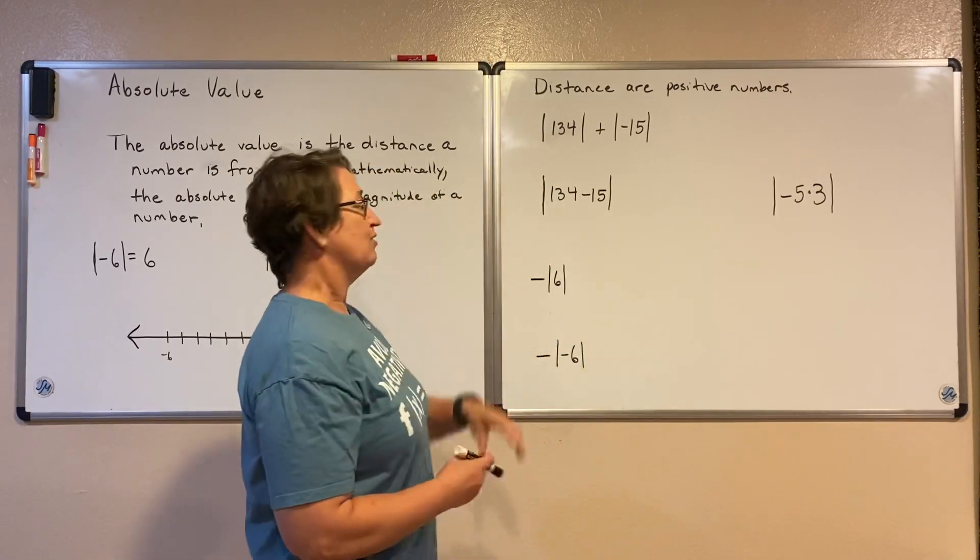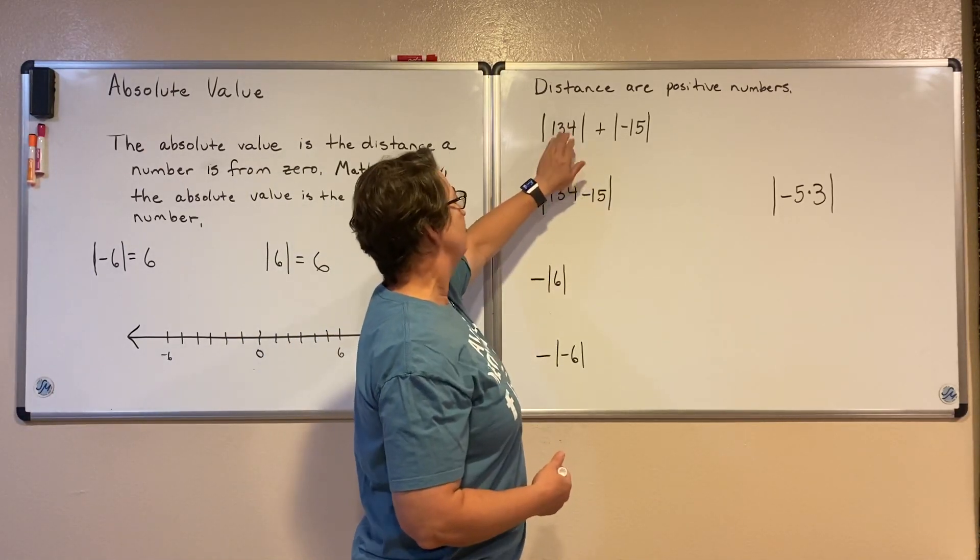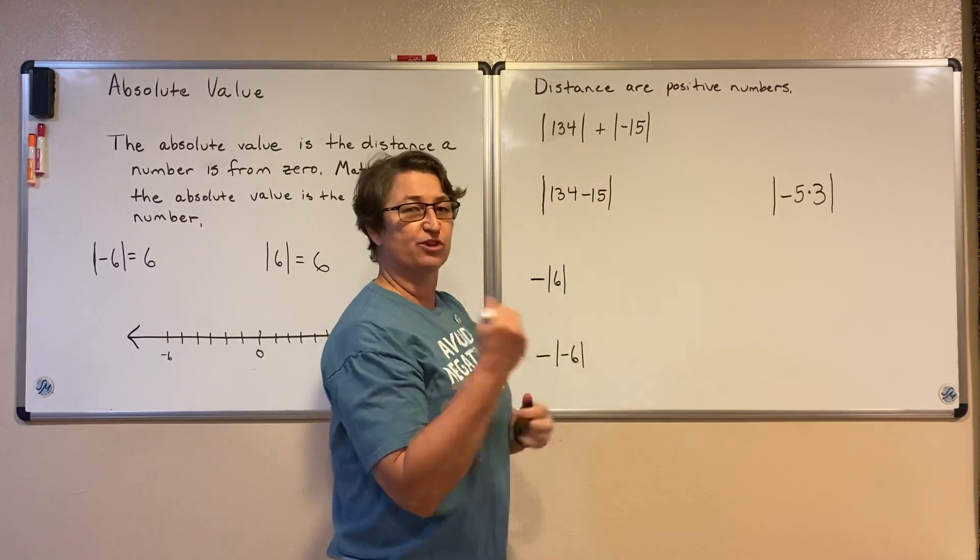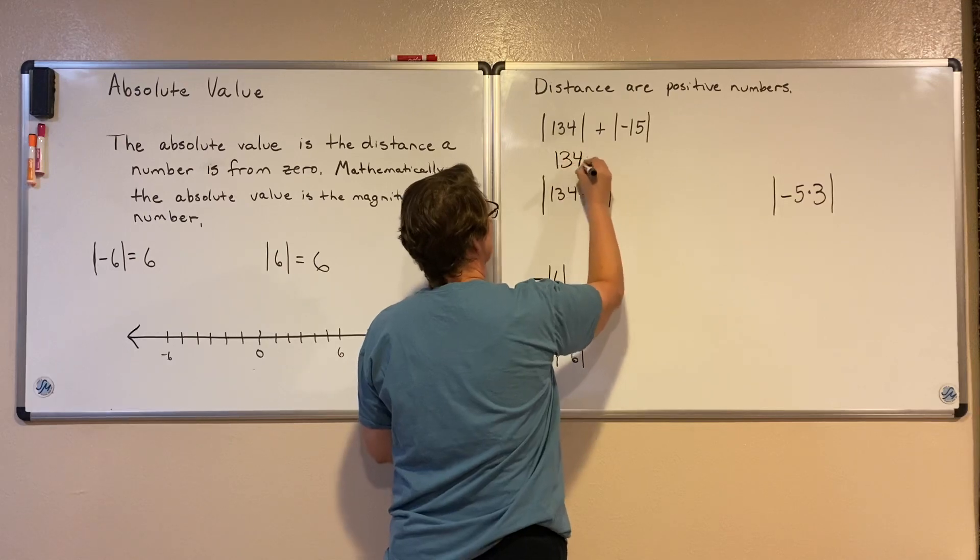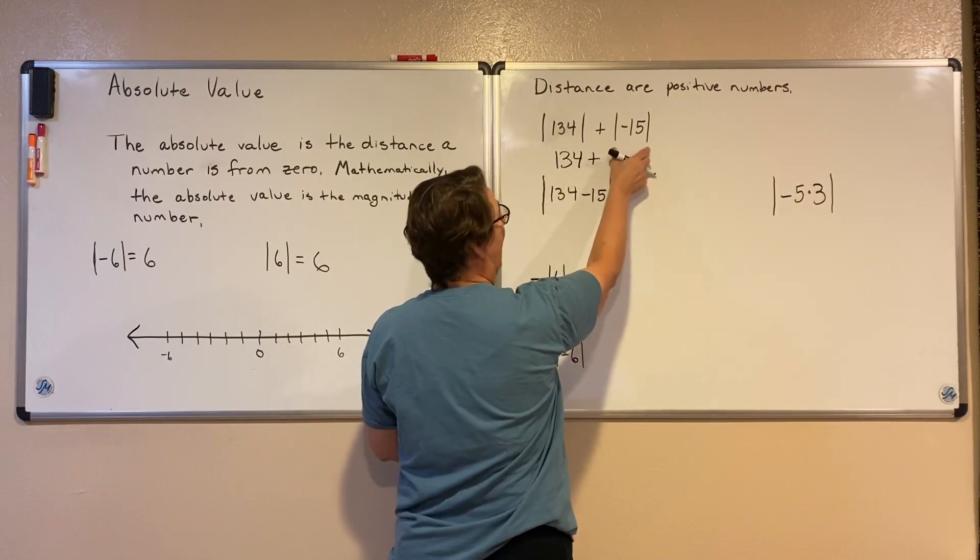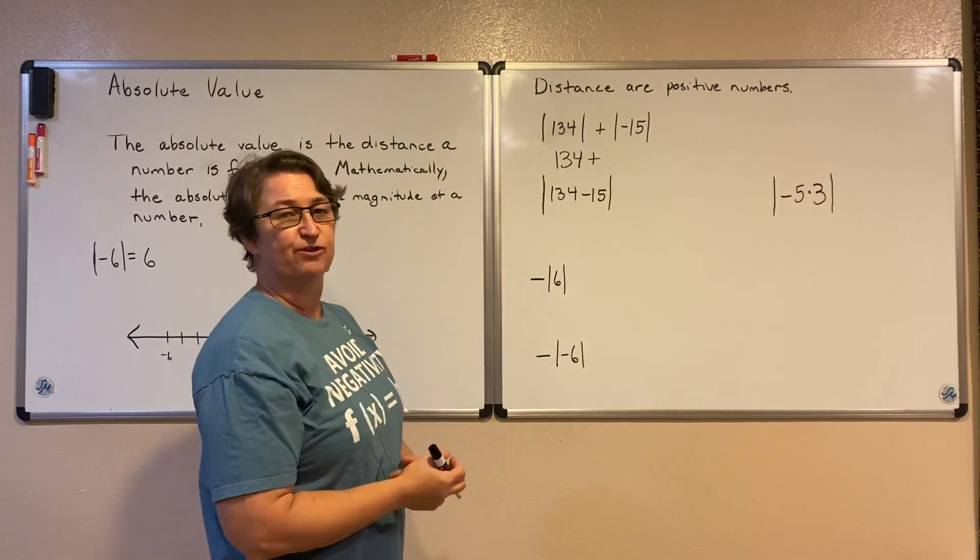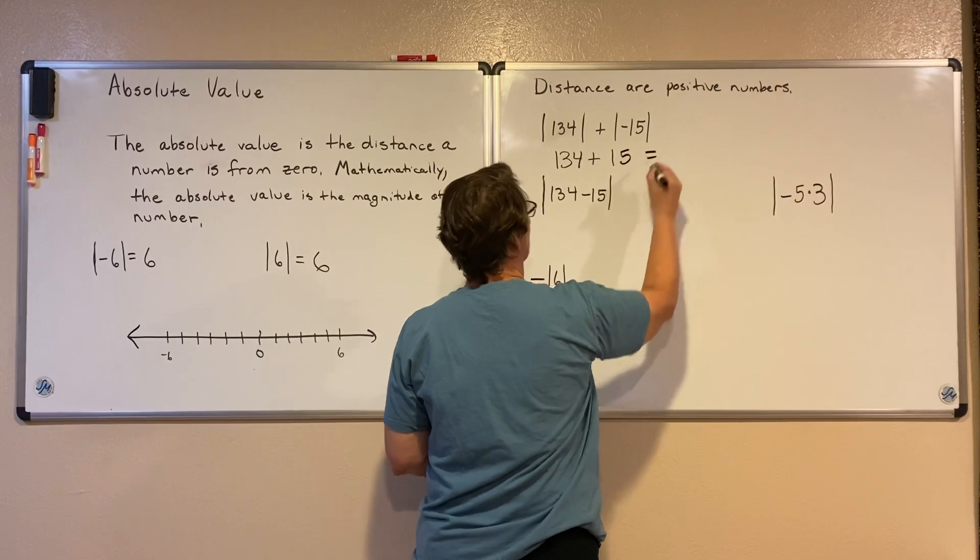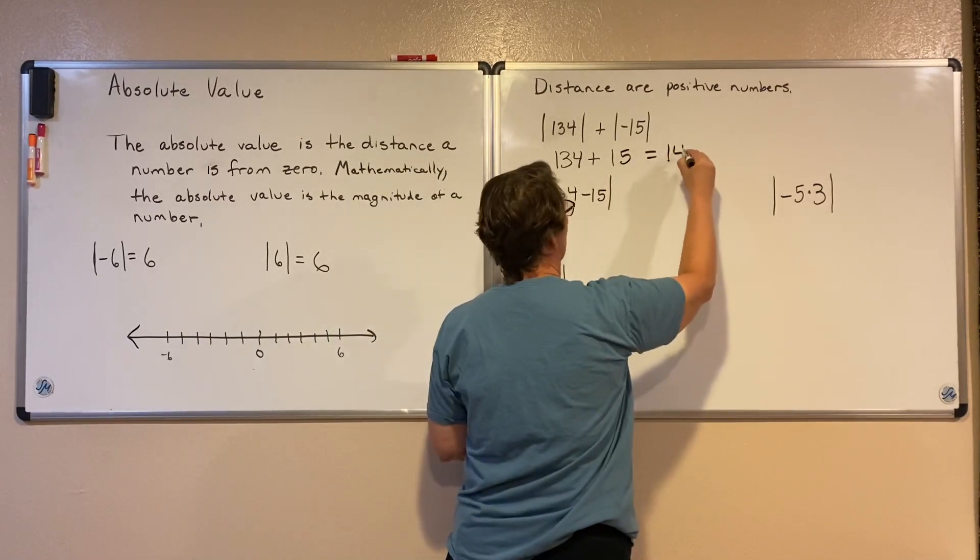So let's do a few more examples. What's the absolute value of 134? Well, how far away is 134 from zero? It's 134 units. Plus, what's the absolute value of negative 15? Well, how far away is negative 15 from zero? It's 15 units. So we add those two together and we get 149.